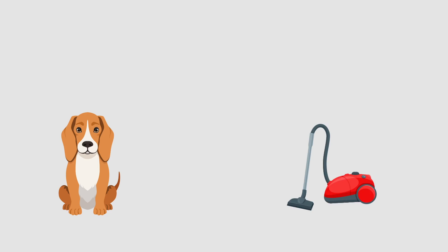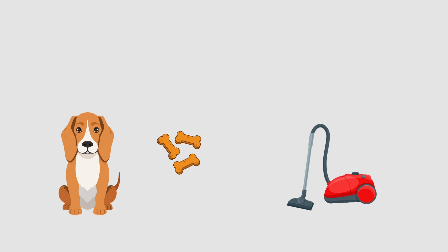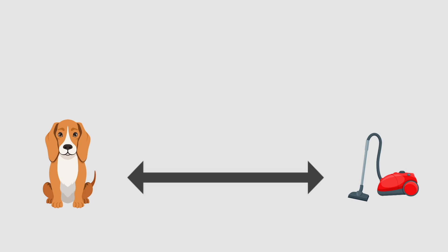Another practical dog training application of classical conditioning is to use it to change how a dog feels in a given situation. For example, if a dog is afraid of the proximity of a certain object, we can pair the presence of that object with things that the dog finds enjoyable, such as food and toys. With repetition, that can change how the dog feels about that object, especially if we do it slowly and keep the object at a certain distance initially.